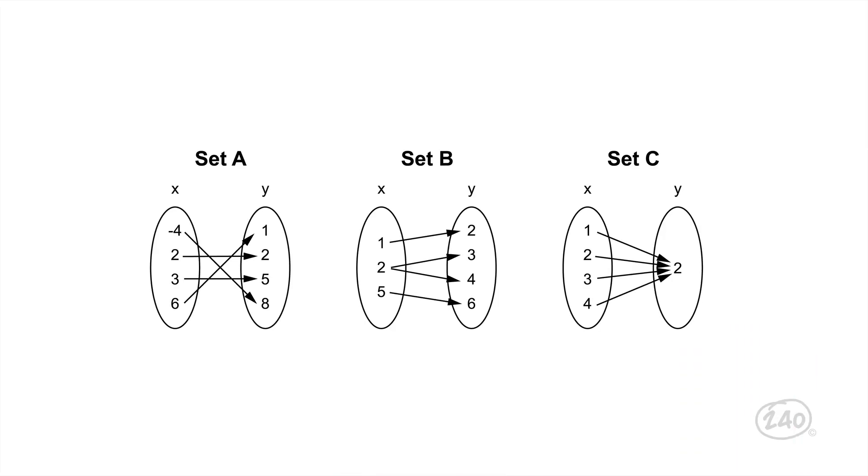For example, here are three relations. The X values are the inputs and the Y values are the outputs. Let's look at set A first. This is a function because each number on the left is connected to only one number on the right. Now, for set B, the number two on the left is connected to both three and four on the right, so set B is not a function. Finally, in set C, each number on the left is only pointed to number two on the right, so this is a function too. Nice.